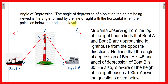The question gives the definition of angle of depression: the angle of depression of a point on the object being viewed is the angle formed by the line of sight with the horizontal when the point lies below the horizontal level. The situation states that Mr. Banta, observing from the top of a lighthouse, finds boat A and boat B approaching from opposite directions. The angle of depression of boat A is 45 degrees, boat B is 30 degrees, and the height of the lighthouse is 100 meters.